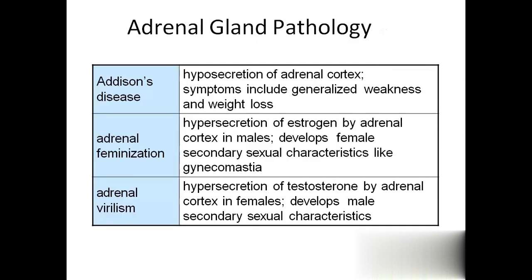Adrenal gland pathology: first, Addison's disease, which means hyposecretion of the adrenal cortex. The adrenal cortex secretes three groups of hormones: mineralocorticoids, glucocorticoids, and steroid sex hormones. If all three hormones are insufficient, the symptoms will be generalized weakness and weight loss.